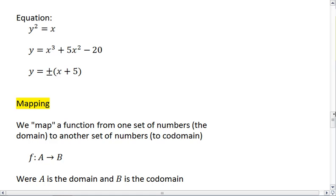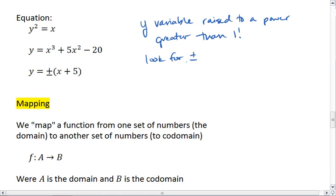And lastly, we can look at equation form. What you want to look for here is a y variable raised to a power greater than 1. Or you can also look for plus minus signs, meaning there are two possible solutions.